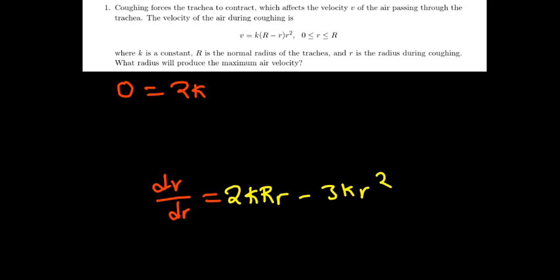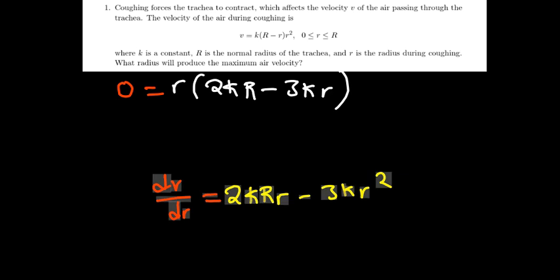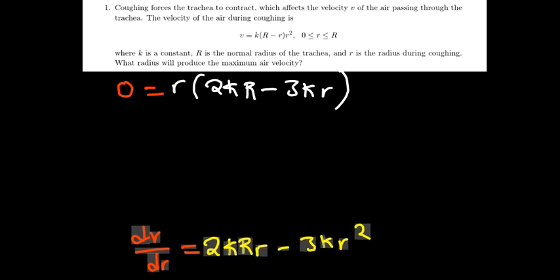Let's factorize what is common. We know that r is common. So we have r times (2kR minus 3kr). We've differentiated. Don't forget about the first derivative, we'll use it later in the question. So at that point, are we able to find the values of r? That's the question. What are the possible values of r?